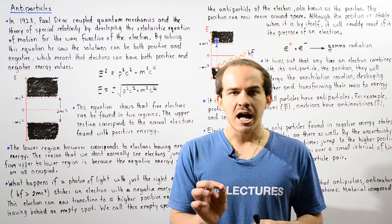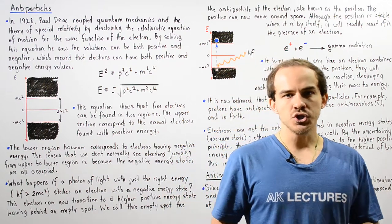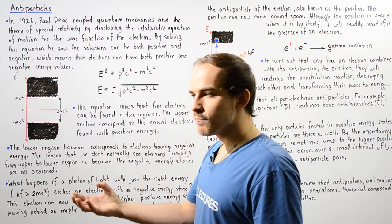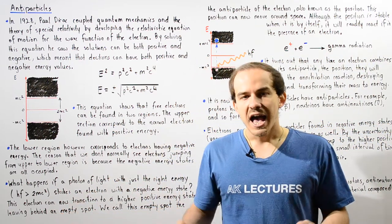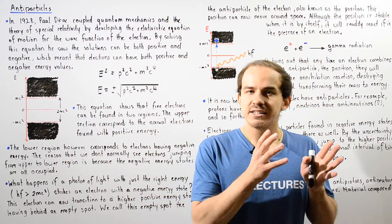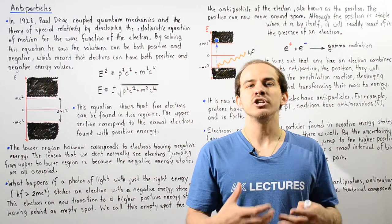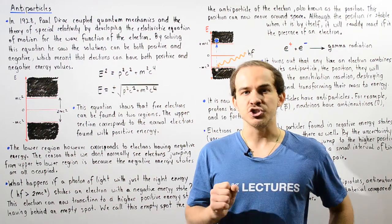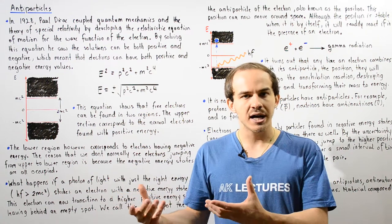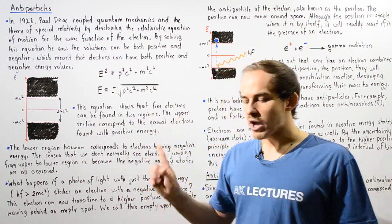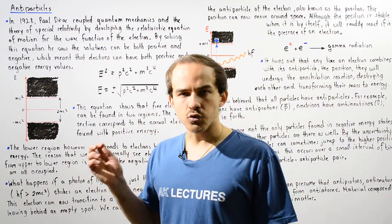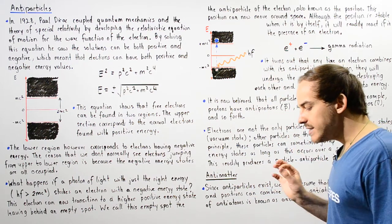After he solved this relativistic equation of motion, he obtained two solutions. One was positive and one was negative, and instead of getting rid of the negative solution, he said that the negative solution actually corresponds to the proper solution. So both the positive and the negative solution correspond to the correct solution to that relativistic equation. That became known as the Dirac equation.